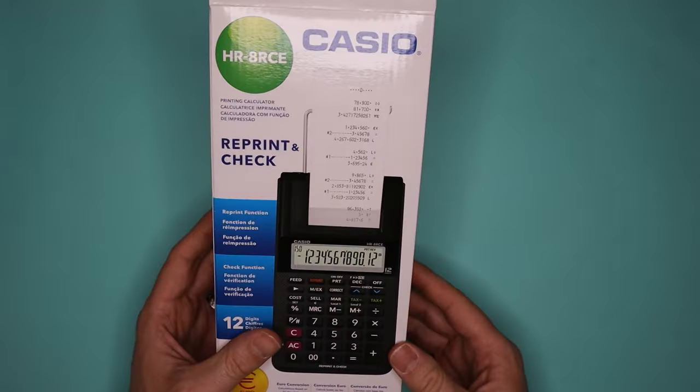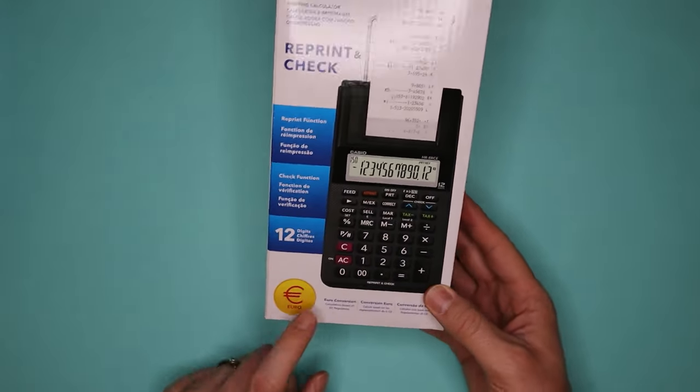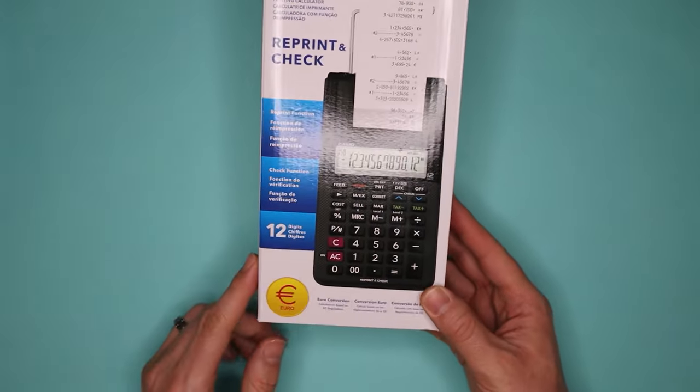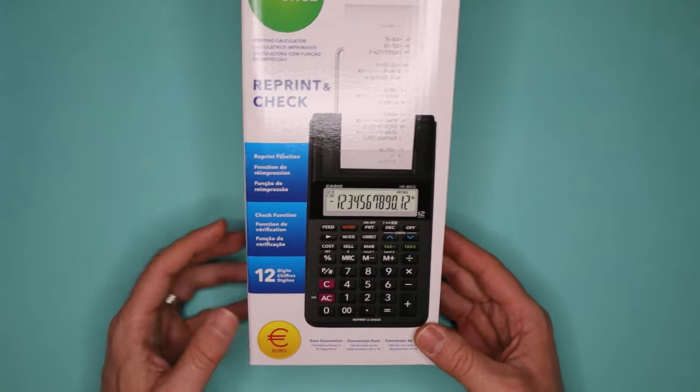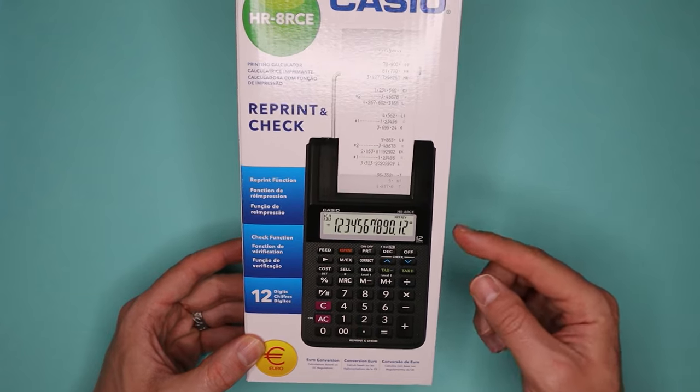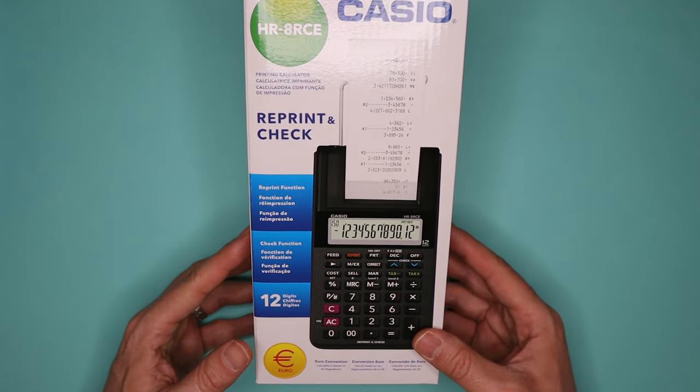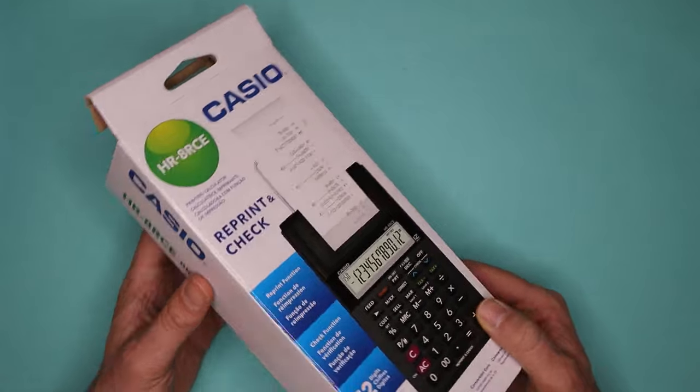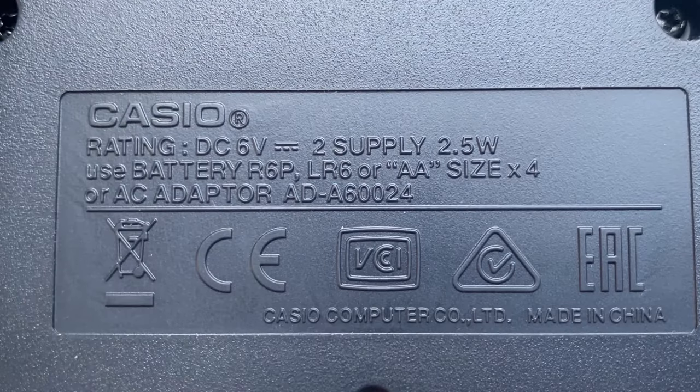This is what the box looks like. Not very exciting. It's got a Euro function now that the UK is out of the Euro. Not sure how useful that is, but it's there. It's battery operated, so it takes four double A batteries or there's also an input for power supply. We'll check on the voltage.